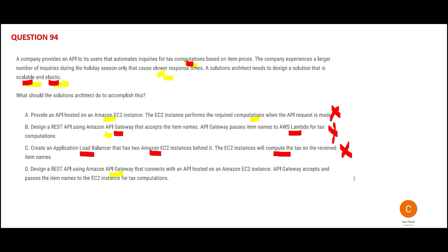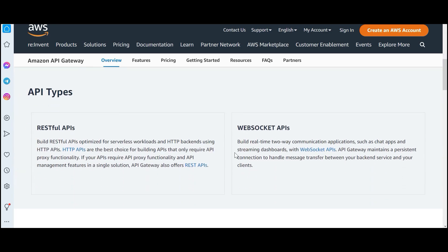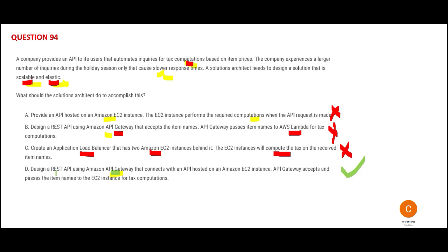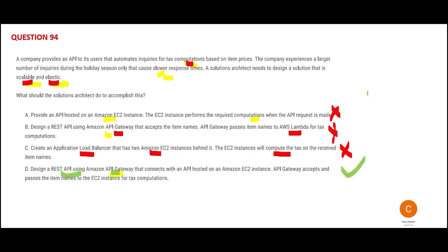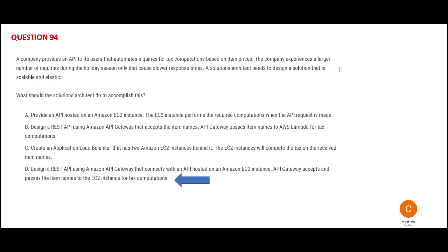Last option D — this has to be correct. It makes use of API Gateway, perfect, plus REST API, which is good for optimized serverless workloads and backend applications. We put the tax computation software on an EC2 instance. The API makes that call, EC2 calculates and sends it back. Your tax calculation may take 30, 40, or 10 minutes — we do not know. So EC2 works here. Option D is the final answer.